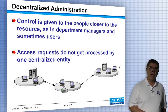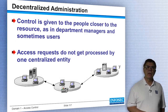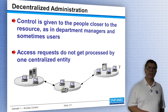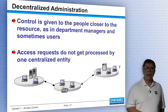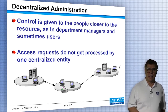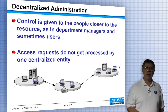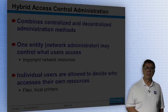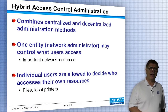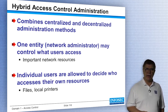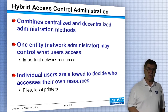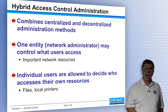Now let's talk about decentralized administration. We need to give local users control — control closer to the actual people in the department, the department managers. For example, if a data owner is a department manager and wants to give someone access to a Word document or Excel spreadsheet, he should be able to do that in a decentralized mode. Or you might say you need both: centrally control critical network resources with one network administrator, but decentralize local files and local printers. We call that a hybrid access control administration.